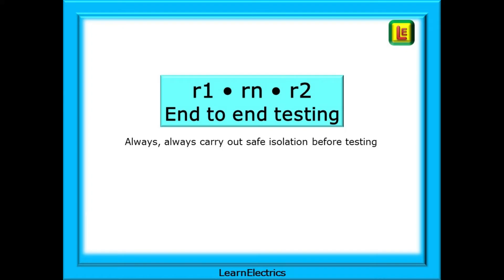We'll begin with end-to-end testing of little R1, little Rn, and little R2. And you must always carry out safe isolation before beginning any of these tests. Forget to do safe isolation, or make a mess of it, and you will fail the assessment.